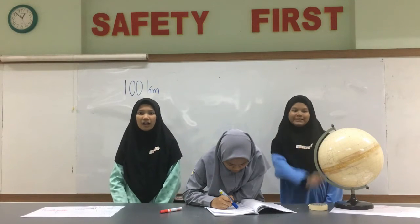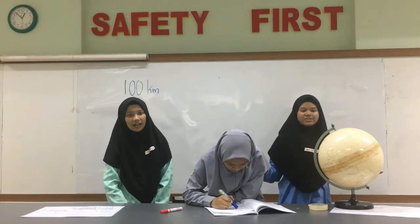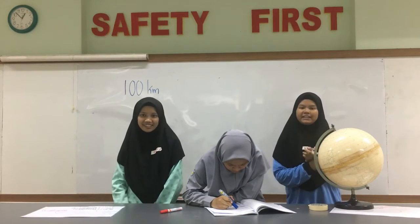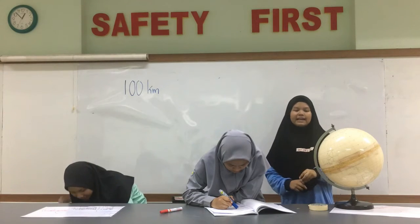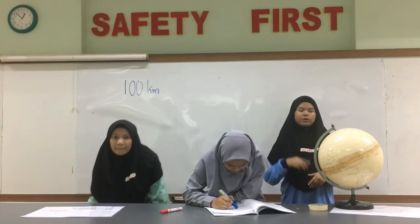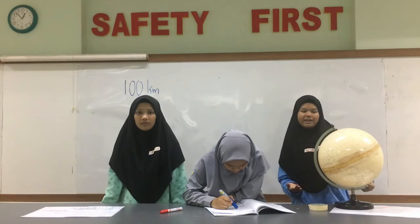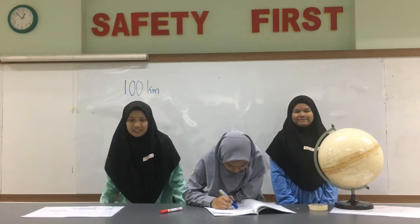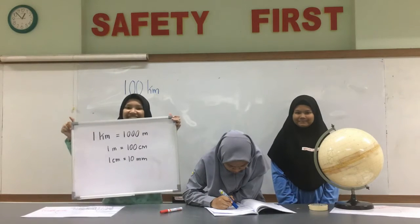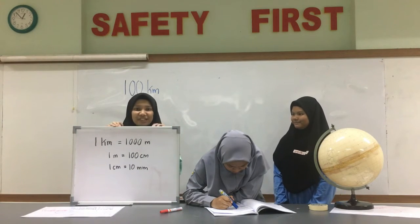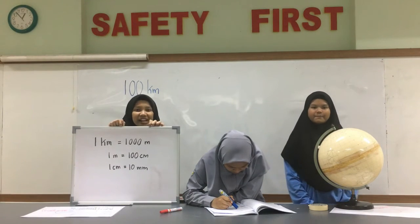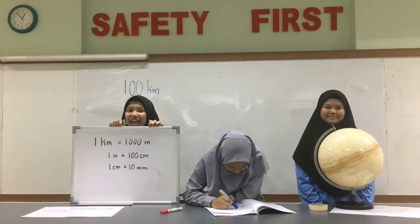Now I am going to tell you about meter. Meter is the base land unit in the SI. The meter was originally defined in 1793 as 1 ten-millionth of the distance from the equator to the North Pole. It was defined in terms of a prototype meter board. One kilometer is equal to 1000 meters, while one meter is equal to 100 centimeters, and one centimeter is equal to 10 millimeters.